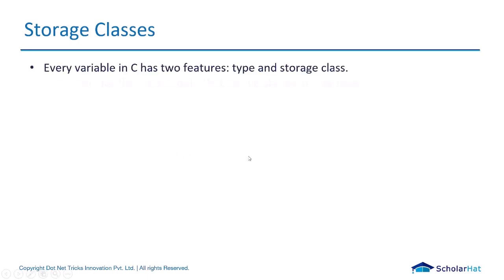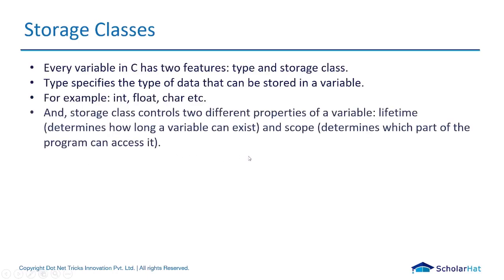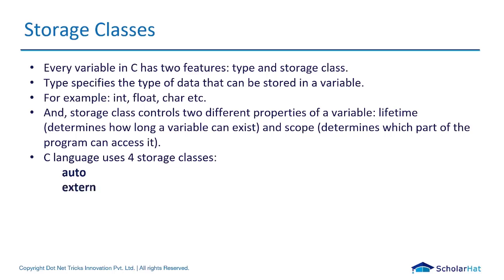Next we're going to learn about storage classes in C. Every variable in C has two features: its type and storage class. Type specifies the kind of data that can be stored in the variable, like integer, float, character, string. Storage class controls two different properties of a variable: lifetime, which determines how long a variable can exist, and scope, which determines which part of the program can access it. C language has four storage classes: auto, external, static, and register.